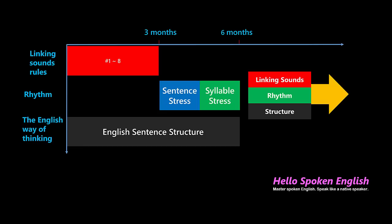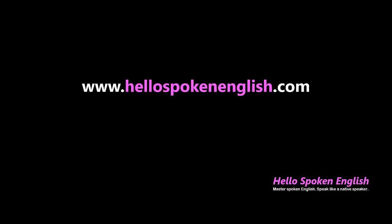In our lectures we are teaching you the English way of thinking and linking sounds rules for the first three months. After that we will add rhythm rules in our lectures using real English movies, so you can listen more accurately and speak more fluently like native speakers. We won't use the dot symbols because it is way too complicated — we will explain the rhythm rules in a simple way. Thanks for watching, hope to see you in our lectures. Have a good one!